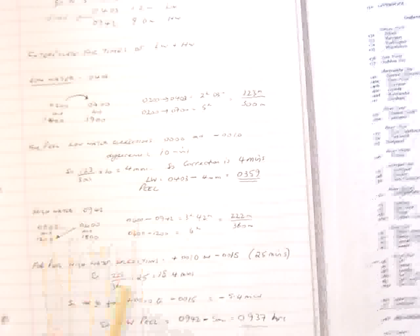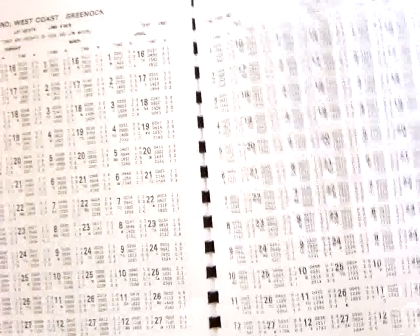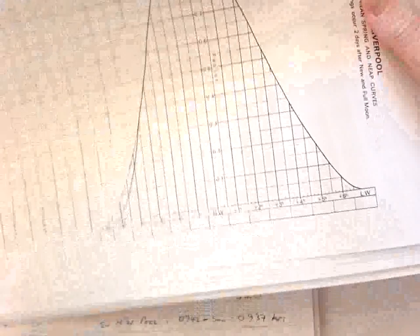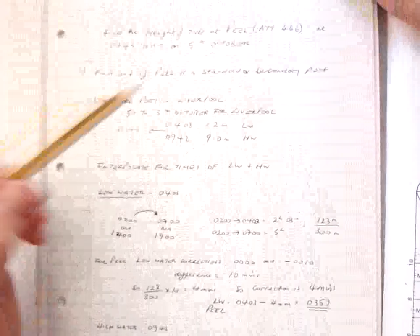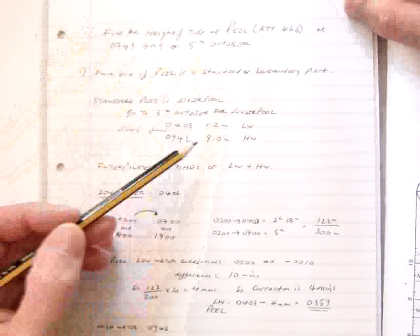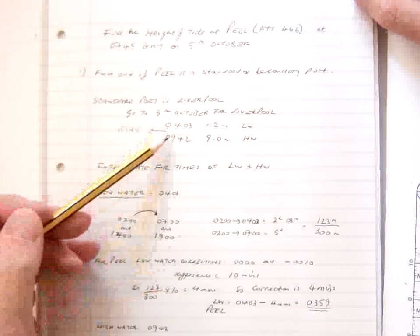So that's how we calculate low water and high water by interpolation with the values. So we've now got 0937. And when we do go to Liverpool, when we use the actual graph that we've used before, then the high water time that we put here is the 0937 that we've calculated. So that's how we look at high water and low water interpolation when we have a secondary port. In this instance, the secondary port was Peel. We had to find the standard port, which was Liverpool, get the times and the heights for the standard port, and by interpolation we calculated the times for the secondary port, which is Peel.